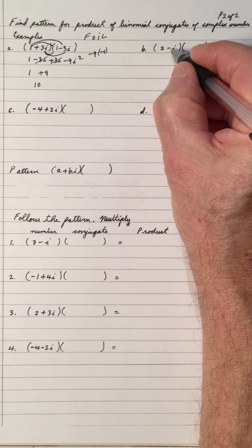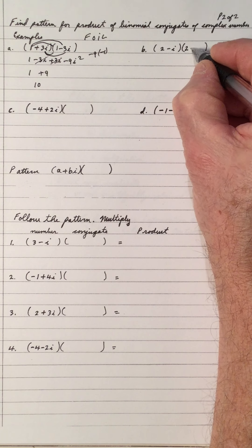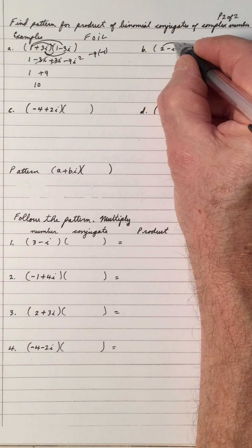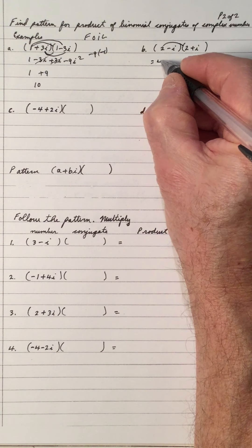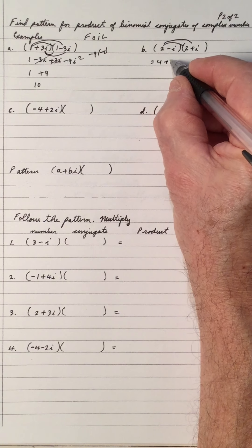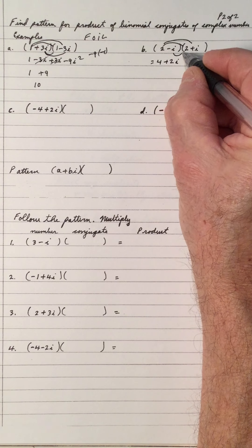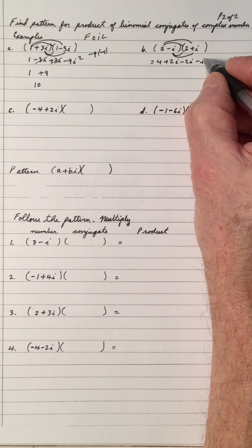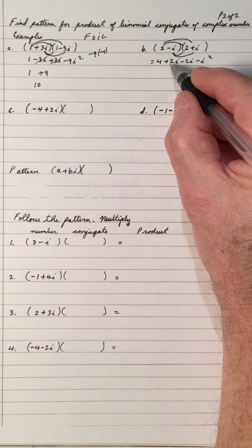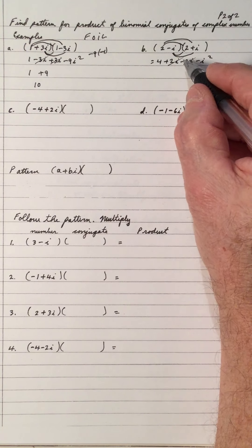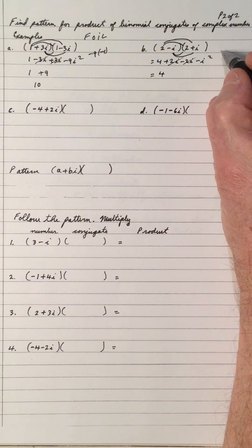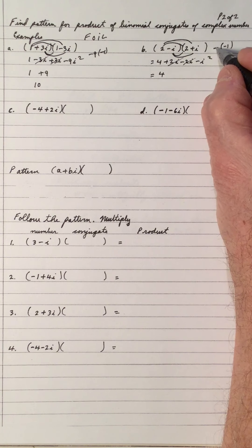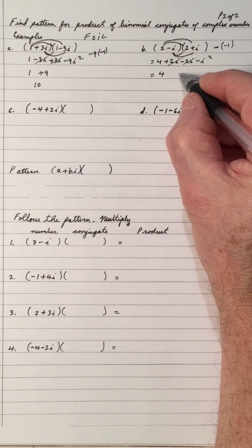The conjugate of 2 minus i is 2 plus i. Multiplying by FOIL: first is 4, outside is 2i, inside is negative 2i, and last is negative i squared. Because they're conjugates, the middle terms cancel out, leaving 4. Since i squared is negative 1, negative i squared is plus 1, giving us 5.